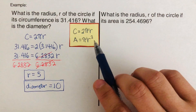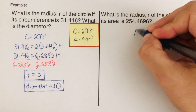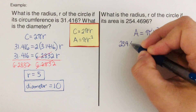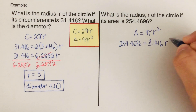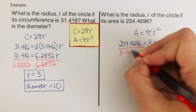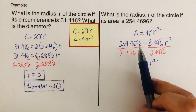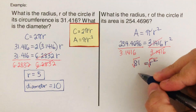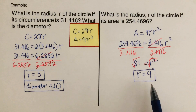Okay, so the next problem is about area. What is the radius of a circle if its area is 254.4696? Using A = πr²: 254.4696 = 3.1416 times r². Dividing both sides by 3.1416 gives r² = 81. Taking the square root of both sides, the square root of 81 is 9. So the radius is 9.